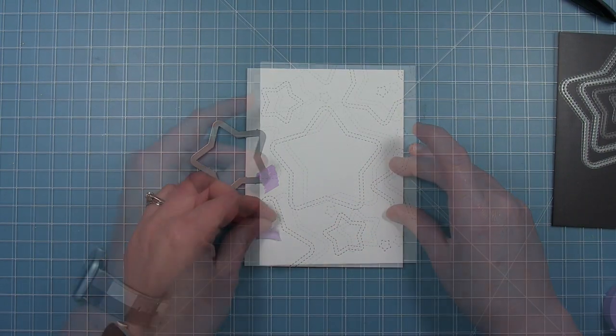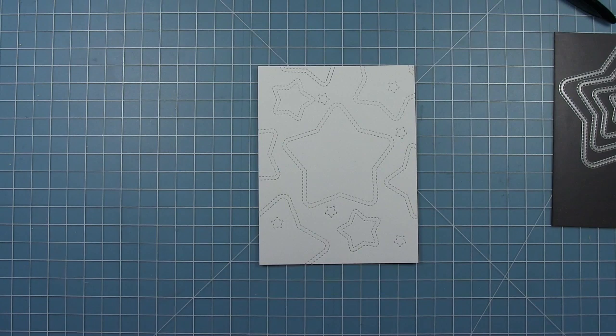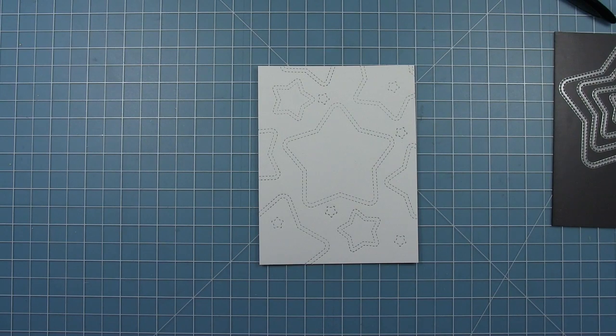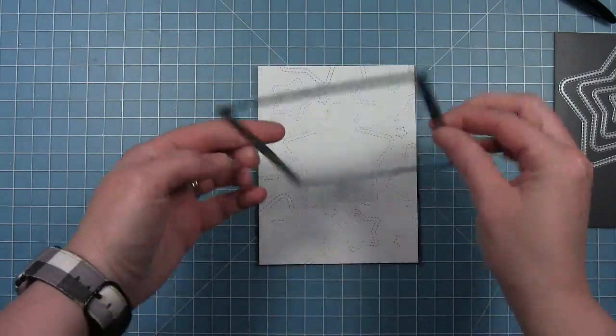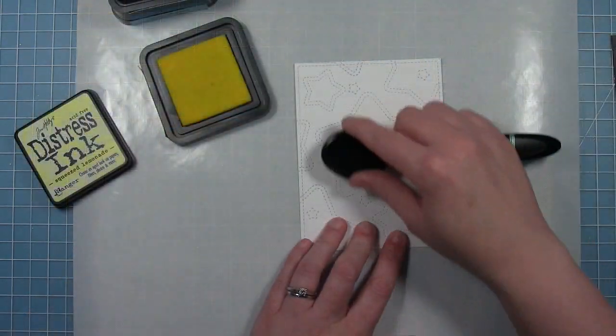So once I have this background designed the way I want it with all those just stitching star details, I'm going to run it through my die cut machine with the largest of the outside-in stitched rectangles so that I have a panel that's slightly smaller than my card base and has a nice stitching detail around the outside.